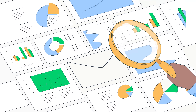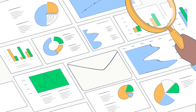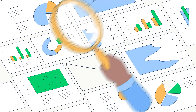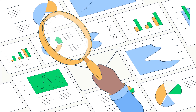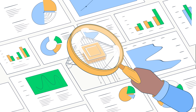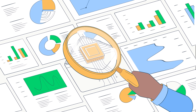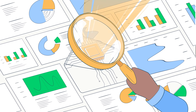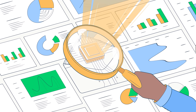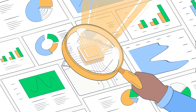How do we track these metrics effectively? One common method is adding a tiny, transparent tracking pixel to the email. When the email is opened, this pixel sends data back to the platform that helps interpret this data.